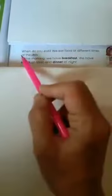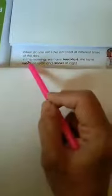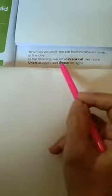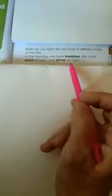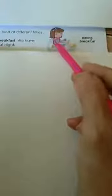When do you eat? We eat food at different times of the day. In the morning, we have breakfast. We have lunch at noon and dinner at night. The girl is eating breakfast.